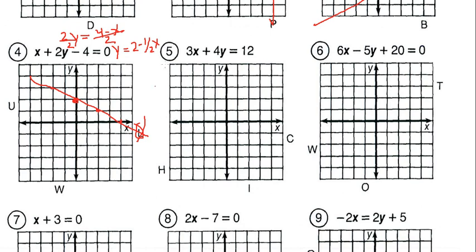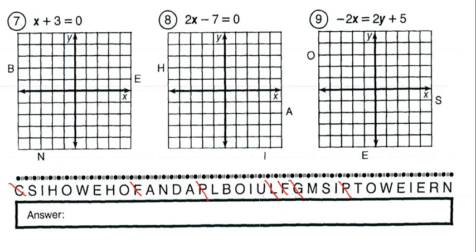Question 5: subtract 3x from both sides and divide by 4, and we get y equals 3 minus 3/4 x. So y starts at 3 with a negative 3/4 slope — down 3, over 4. That line goes straight through letter C, so let's go ahead and cross out C.